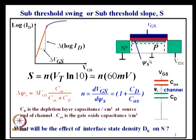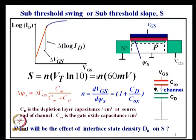If delta Vgs is exactly equal to delta psi_s, the coupling is excellent. But because of the sharing of the voltage between the gate oxide and the depletion layer, the coupling is not that good. What you get is Vgs shared between these two, and since psi_s is less than Vgs, we wrote Vgs/n equals psi_s. So delta Vgs by delta psi_s will be n — that n is the coupling factor, the ratio of psi_s to Vgs.